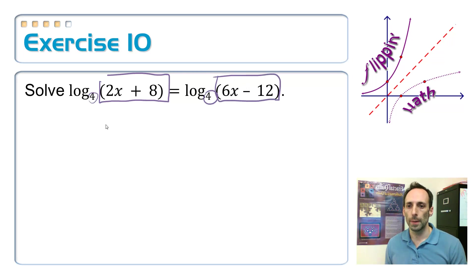So, solve this logarithmic equation, and notice that they're both log base 4 on both sides. The bases are the same, so therefore what we're taking the logs of must be the same. So, just set them equal to each other. 2x plus 8 is equal to 6x minus 12.